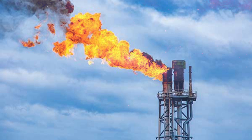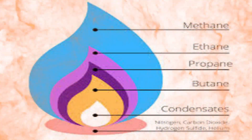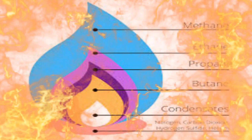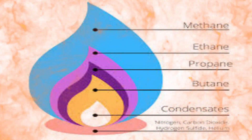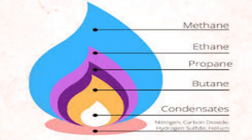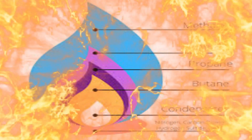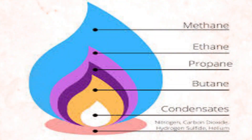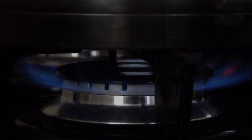Natural gas is a fossil energy source that formed deep beneath the Earth's surface. Natural gas contains many different compounds. The largest component of natural gas is methane, a compound with one carbon atom and four hydrogen atoms, CH4. Natural gas also contains smaller amounts of natural gas liquids (NGLs), which are also hydrocarbon gas liquids, and non-hydrocarbon gases, such as carbon dioxide and water vapor. We use natural gas as a fuel and to make materials and chemicals.